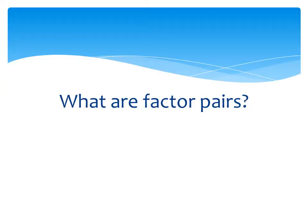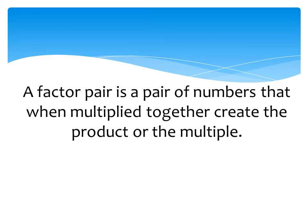So what are factor pairs? Pause the video here and see if you can explain what a factor pair is. A factor pair is a pair of numbers that when multiplied together create the product, which is the multiple.